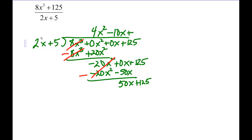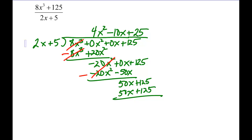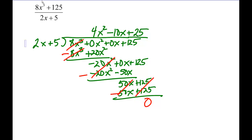Now we ask: what would we multiply 2x by to get 50x? How many times does 2x go into 50x? Well, that's 25 times. So we have plus 25 up here. We do our multiplication: 25 times 2x is 50x, then 25 times 5 is 125. Finally we subtract again, and both terms subtract out so we get a zero remainder. The quotient of this division is 4x squared minus 10x plus 25.